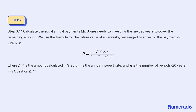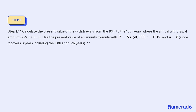Question 2. Step 1: Calculate the present value of the withdrawals from the 10th to the 15th year, where the annual withdrawal amount is Rs 50,000. Use the present value of an annuity formula with P = Rs 50,000, R = 0.12, and N = 6, since it covers 6 years including the 10th and 15th years.